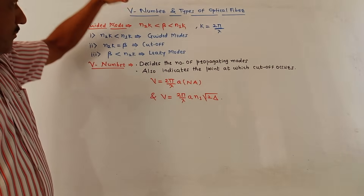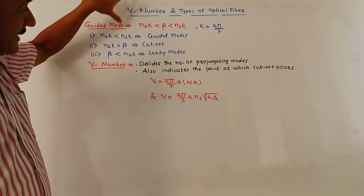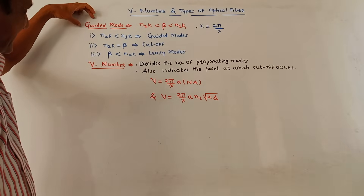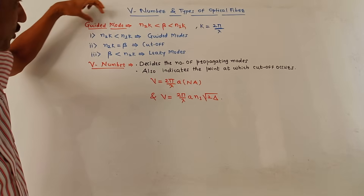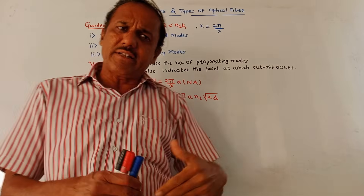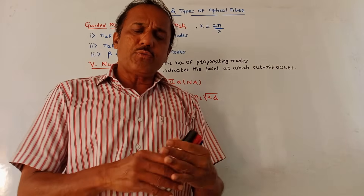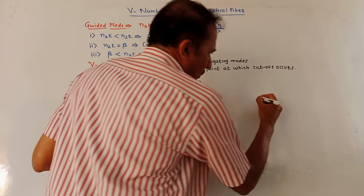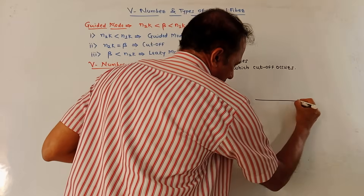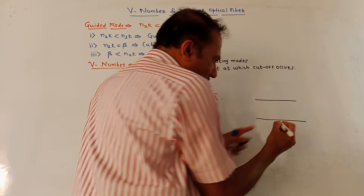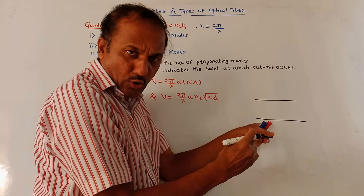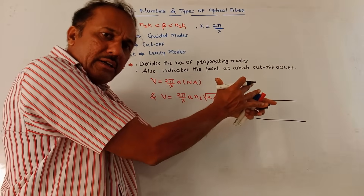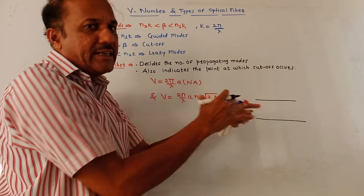Before starting the different types of optical cable, first we'll discuss the concept of guided mode. Recall what we studied in the earlier video. In case of optical fiber, the innermost layer is the core layer, above which there is a cladding layer, and the third outer layer is the jacket.